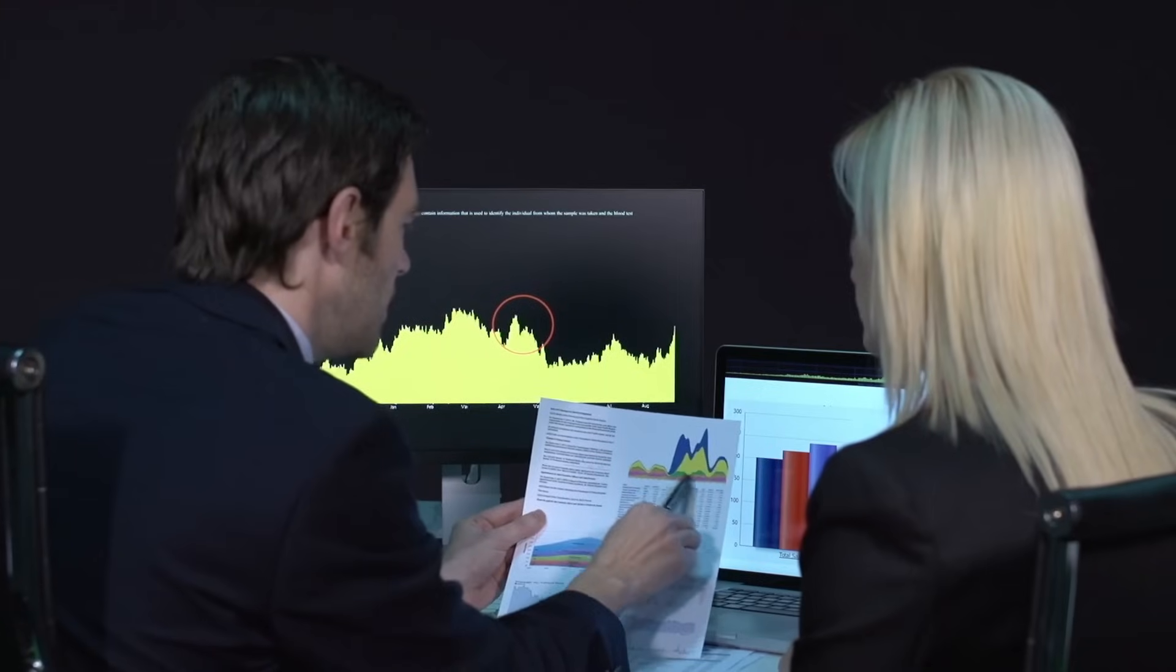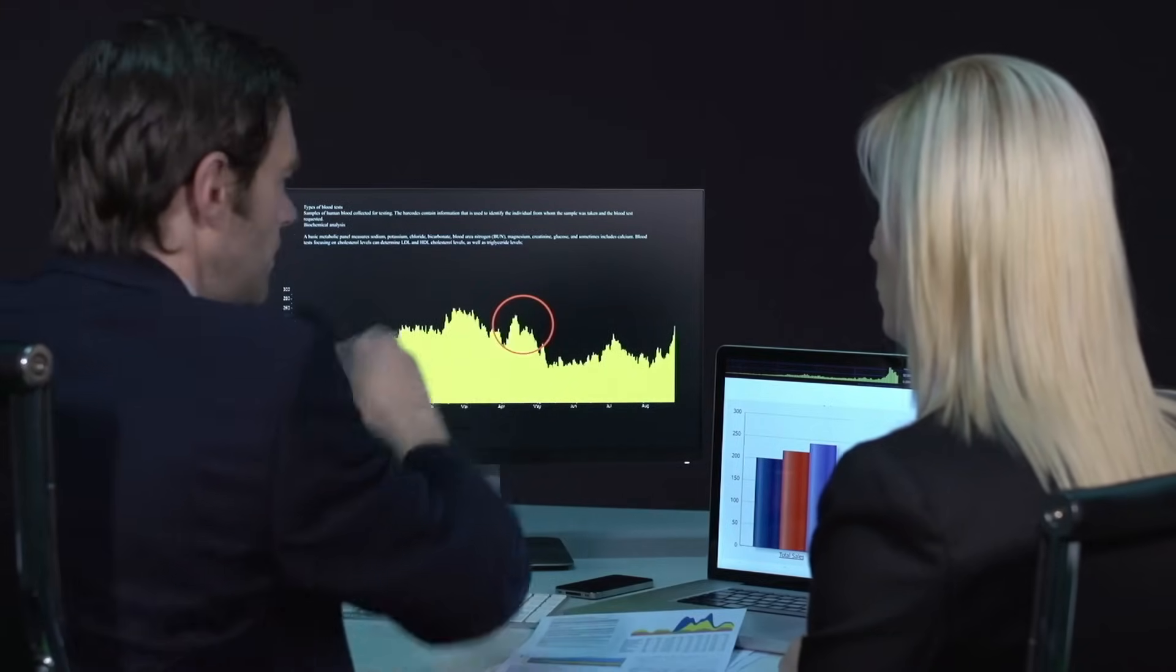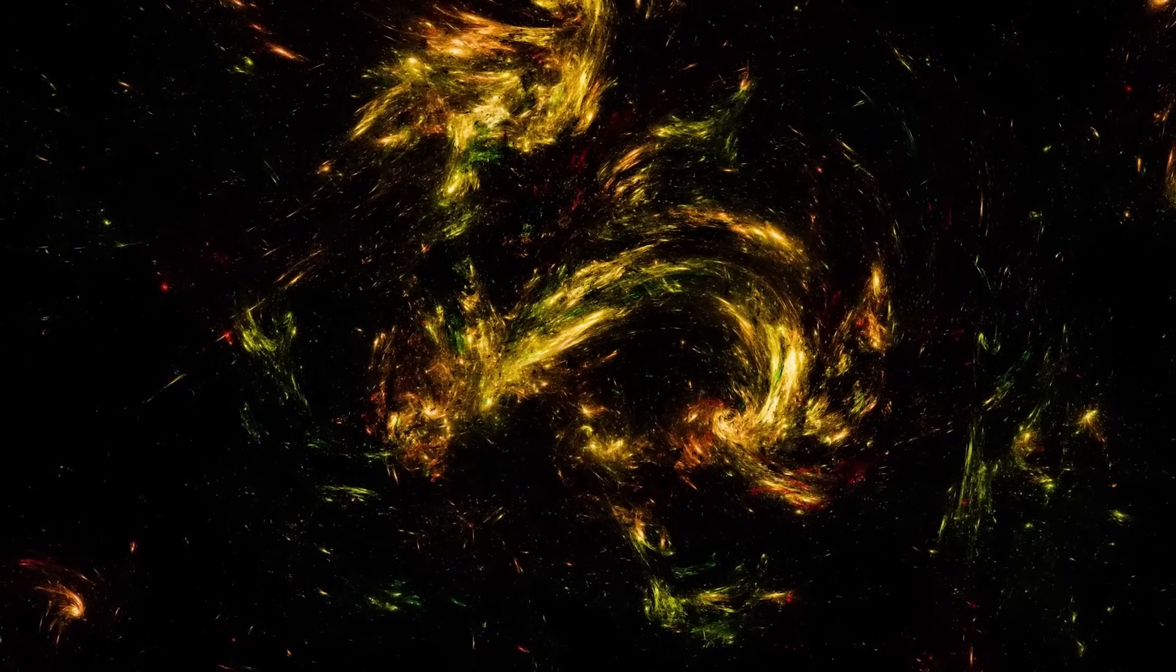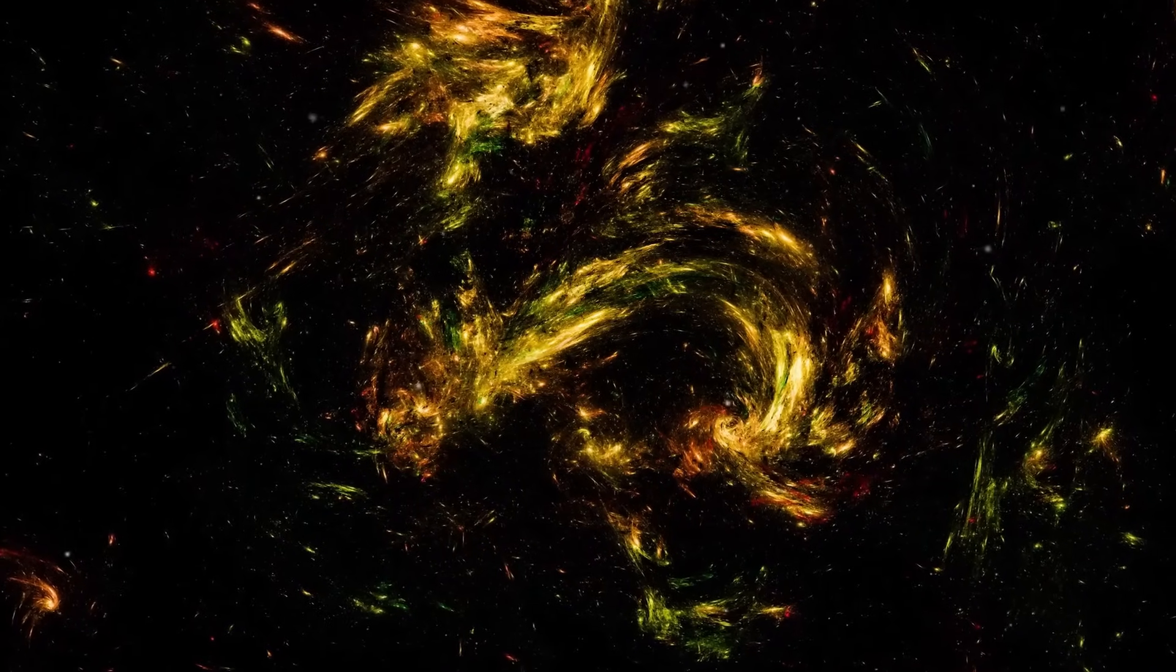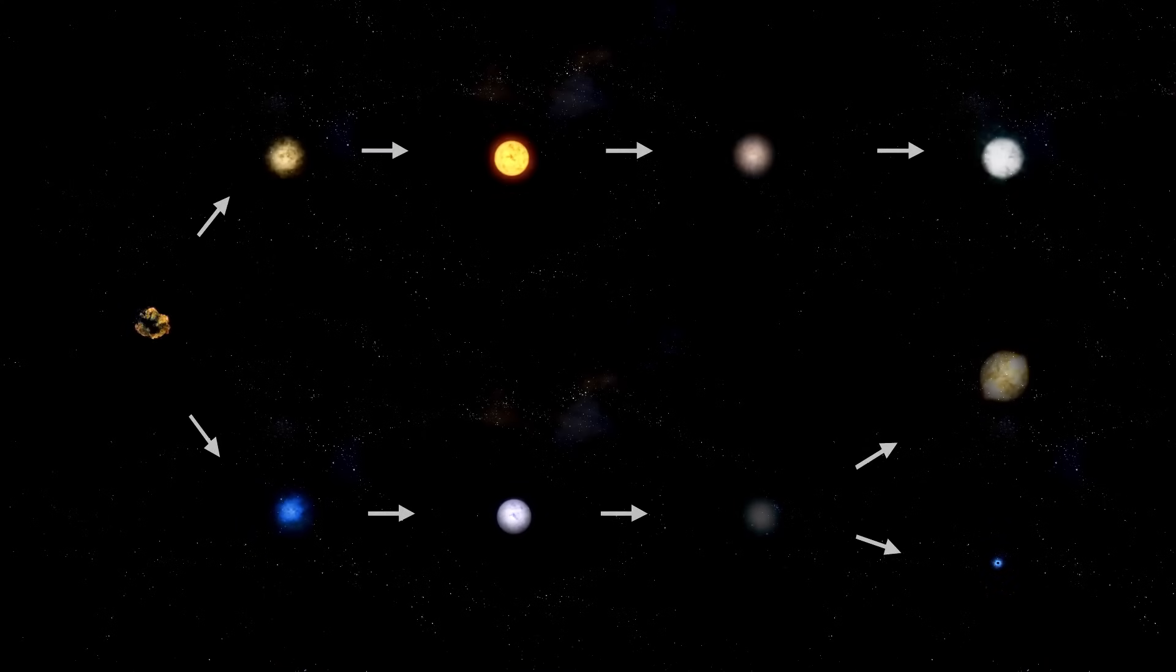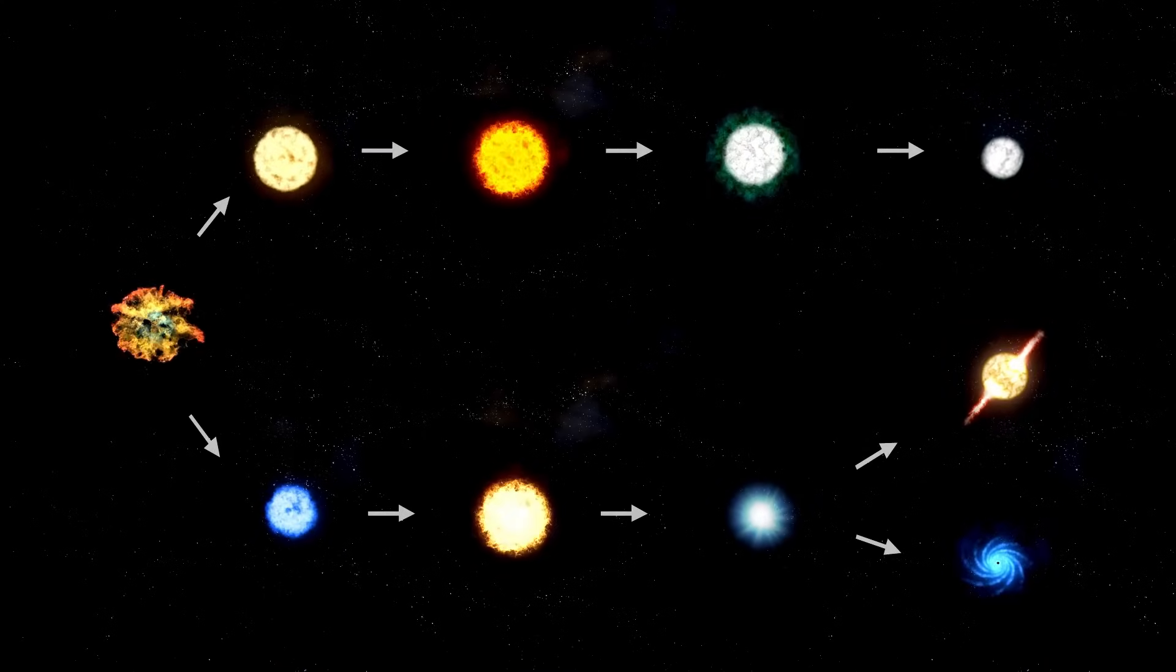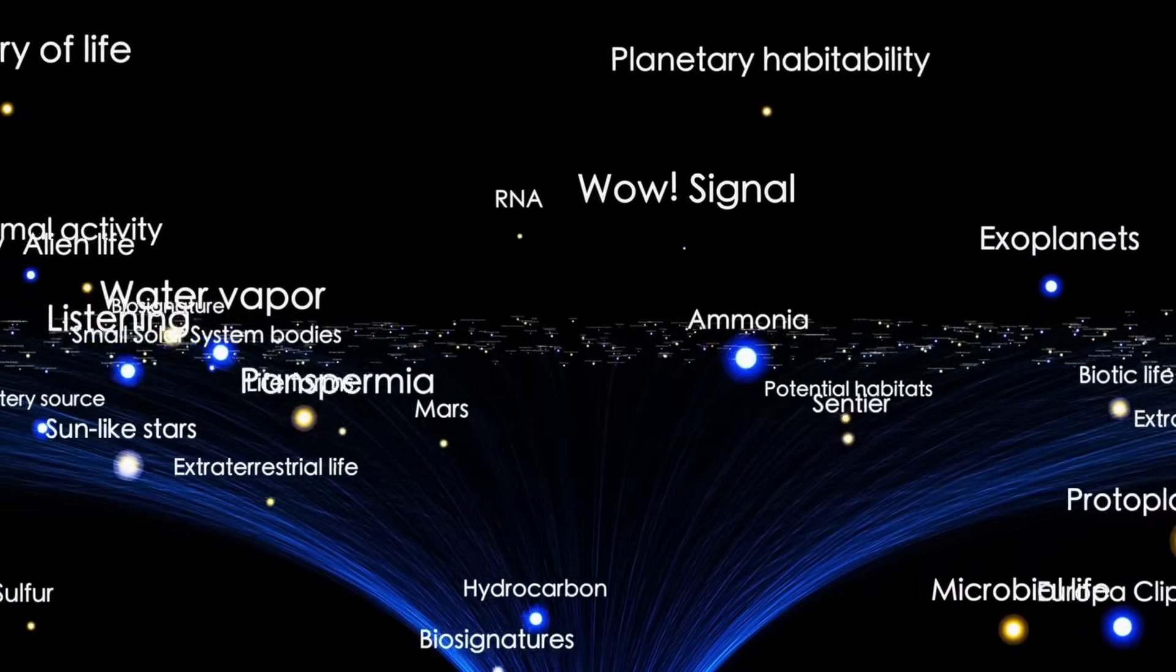The collapse of Betelgeuse doesn't end with its visible explosion. Shockwaves from the event are spreading across light years, disturbing the interstellar medium surrounding the star. Webb has already detected high-energy particles racing outward, heating gas clouds, and reshaping the star's dusty outer halo.